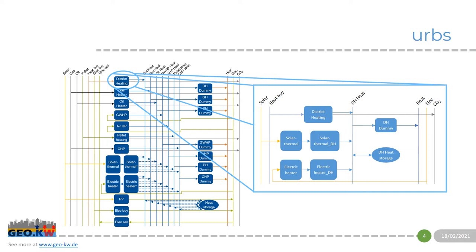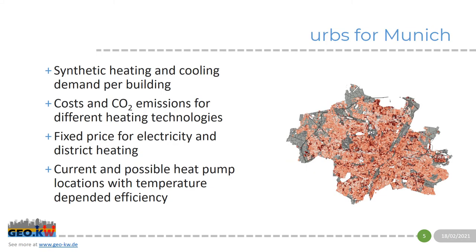Let's go on with the model for Munich. We see here now on the right the map of Munich with heat demand per building. So each dot is one building and depending on the color it has a higher or lower heat demand. This heat demand is generated synthetically. We can also do this for the cooling demand, so we have both per building.